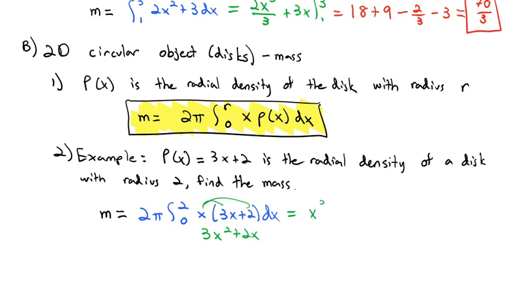That's going to be x³ + x². Don't lose the 2π out front though. So 2π times x³ + x² integrated from 0 to 2. Plugging those limits of integration in, plugging 2 in we get 8 + 4, plugging 0 in we get 0. That's 12 times 2 or 24π for the mass of this two-dimensional disk.